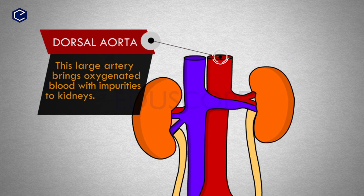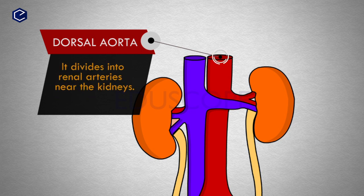The dorsal aorta is a large artery that brings oxygenated blood with impurities to the kidneys. It divides into renal arteries near the kidneys.